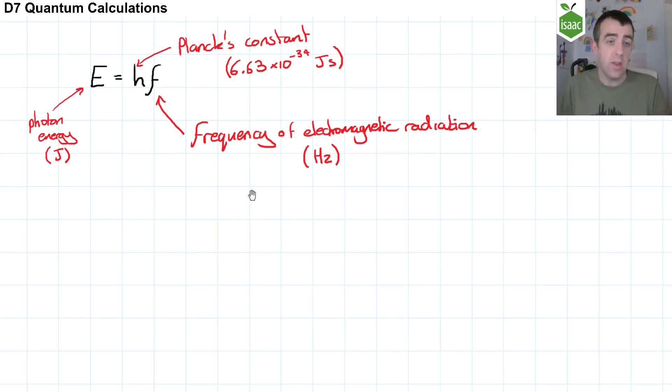If you know the frequency of the electromagnetic radiation, you can find the energy of each quantum of that radiation, which we call a photon, in joules using this equation.